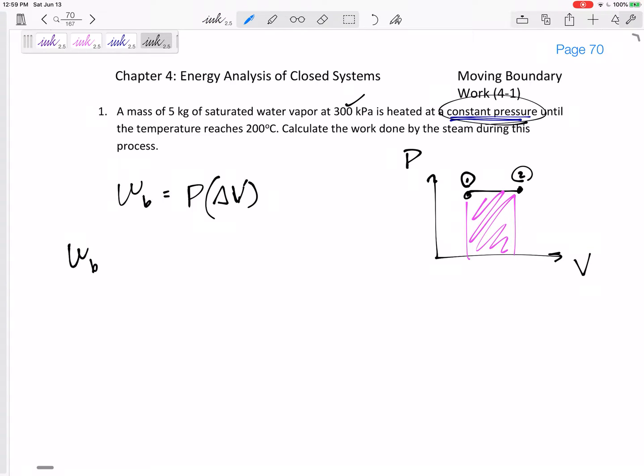We want the boundary work. We know the pressure, we just need to figure out V2 minus V1. They didn't give us volume directly, but they gave us mass and other information. In a roundabout way, they may have given us the specific volume. We do want capital V, the total volume.